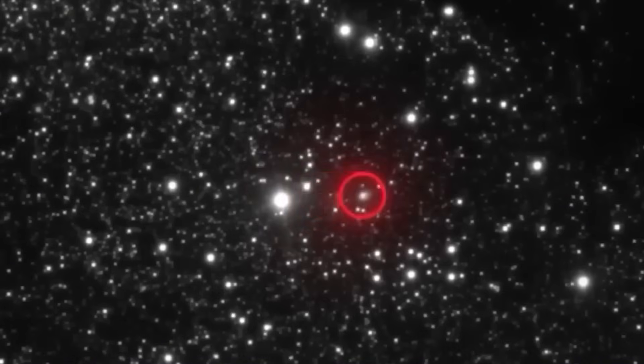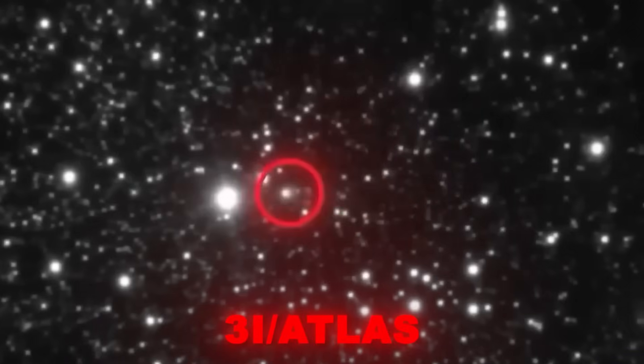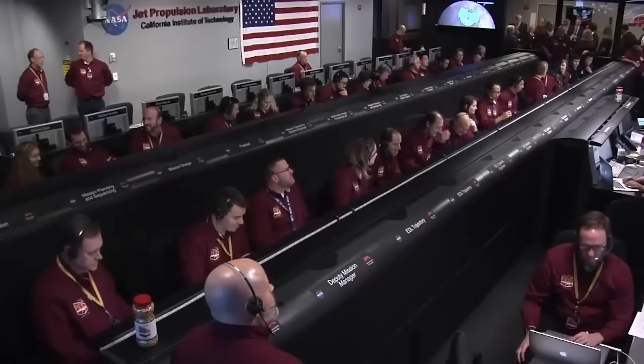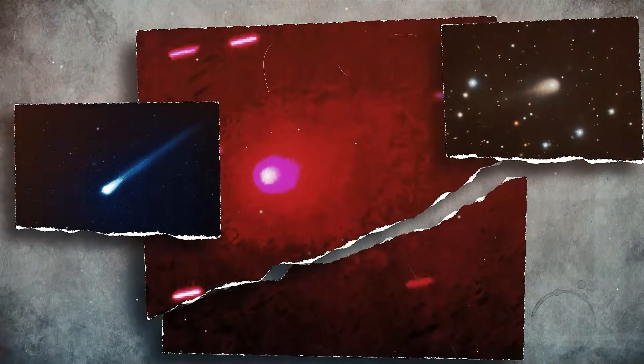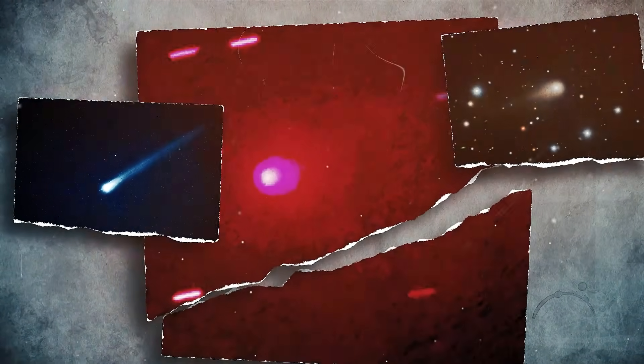NASA and ESA just released new images of comet 3I Atlas, and scientists are struggling to explain what they are seeing. This interstellar object is erupting, pulsing, and throwing off multiple tails as it races through our solar system.